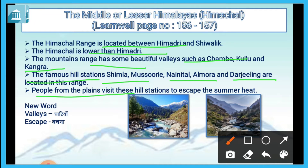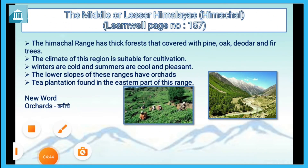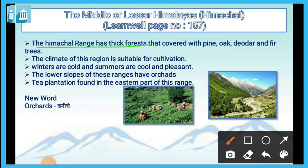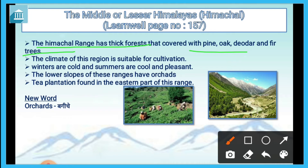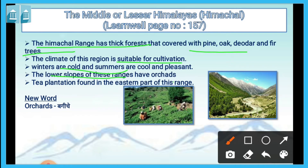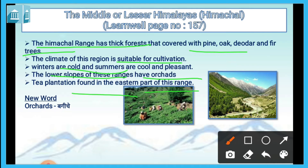People from the plains visit these hill stations to escape the summer heat. The Himachal range has thick forests covered with pine, oak, deodar and fir trees. The climate of this region is suitable for cultivation. Winters are cold and summers are cool and pleasant. The lower slopes also have orchards, and tea plantations are found in the eastern part of this range.